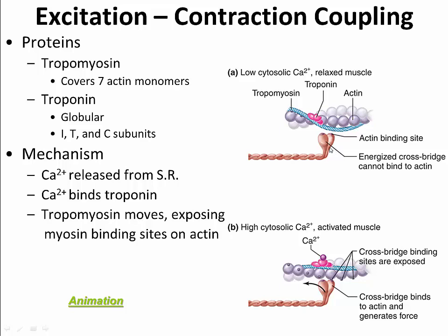In skeletal muscle, nothing happens until calcium comes along and binds to the calcium-binding subunit of troponin. This changes the conformation of troponin, which moves tropomyosin out of the way. Once the long rope-like tropomyosin is moved out of the way, myosin can bind to actin. Once myosin binds to actin, it completes what's referred to as its power stroke, undergoing a contraction and moving the actin filament ever so slightly. This process — and only this — generates muscle contraction.